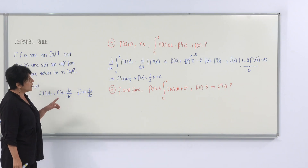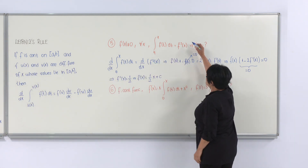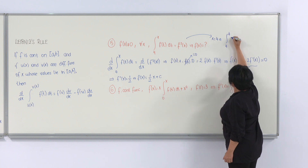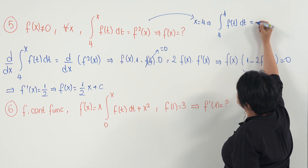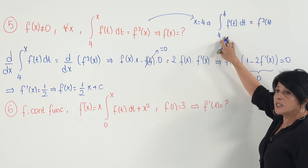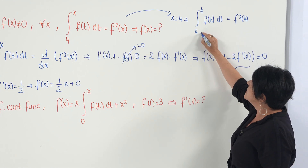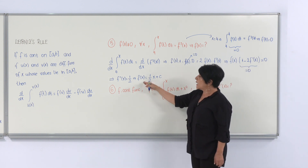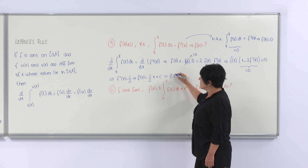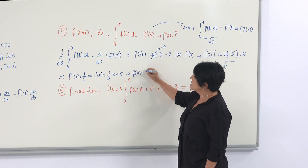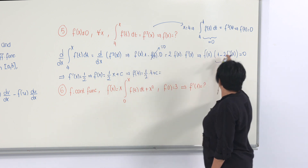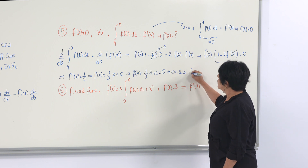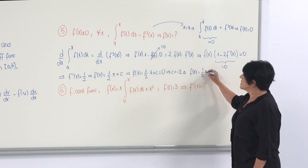To find the constant C, substitute x = 4 into the original equation. The integral from 4 to 4 of f(t) dt is 0 (same limits), so f²(4) = 0, meaning f(4) = 0. Plugging into f(x) = x/2 + C: 0 = 4/2 + C, so C = −2. Therefore f(x) = x/2 − 2.